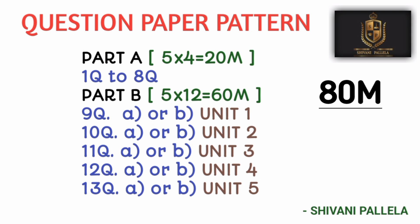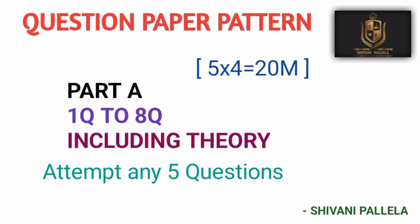Coming to the question paper pattern: Part A consists of 20 marks. Questions 1 to 8 will be given; out of eight questions you need to attempt any five, each carrying four marks. Part A consists of theory as well as problematic — some questions will come from problematic and some from theory.